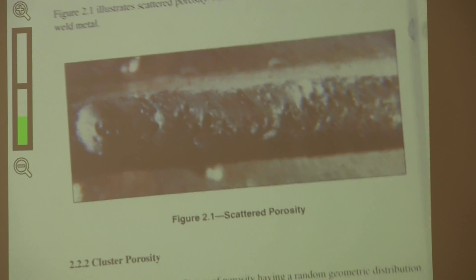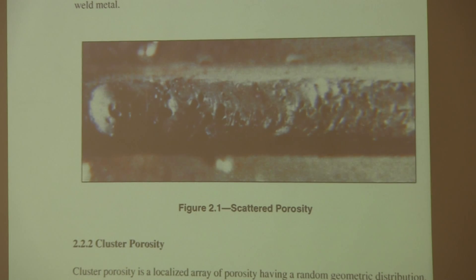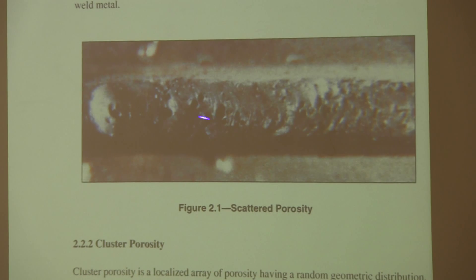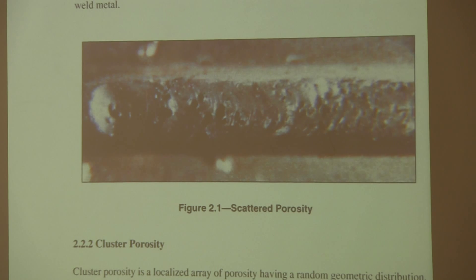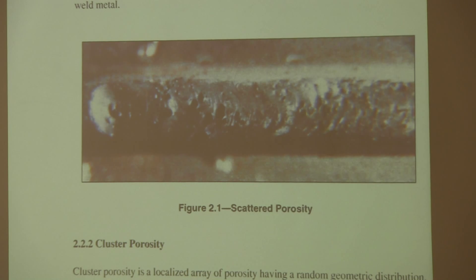Looking at this weld, there's a bunch of little pores — basically gas bubbles that have risen up as the metal was solidifying. That's scattered porosity, and there's enough there that it would probably violate the code.